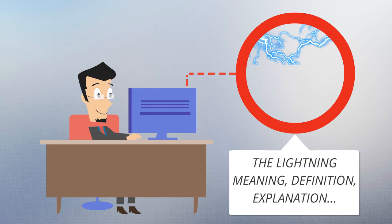This discharge occurs between electrically charged regions of a cloud, called intracloud lightning or IC, between two clouds, CC lightning, or between a cloud and the ground, CG lightning.